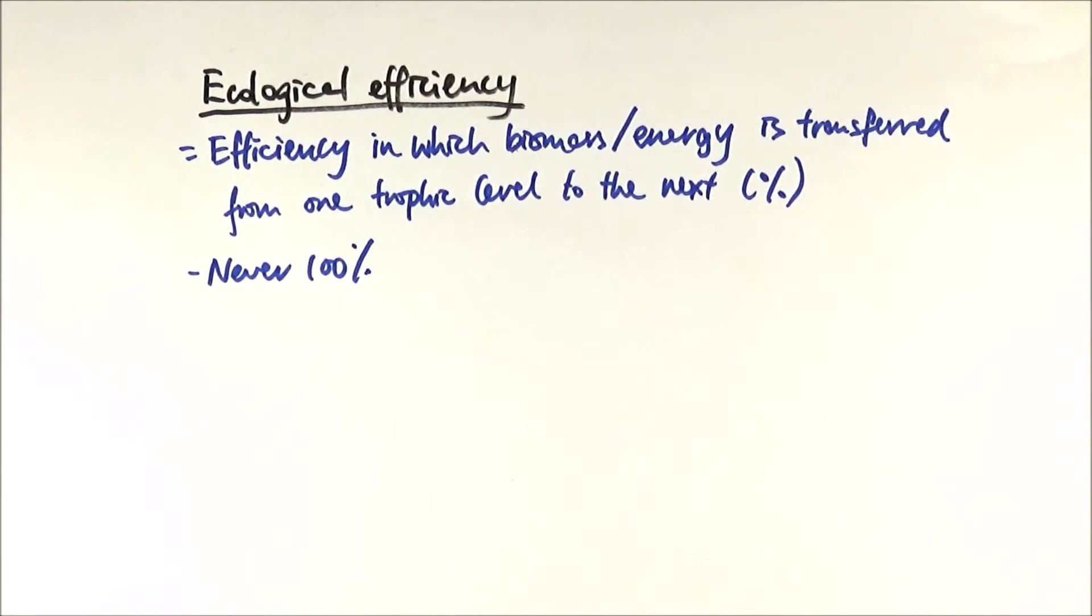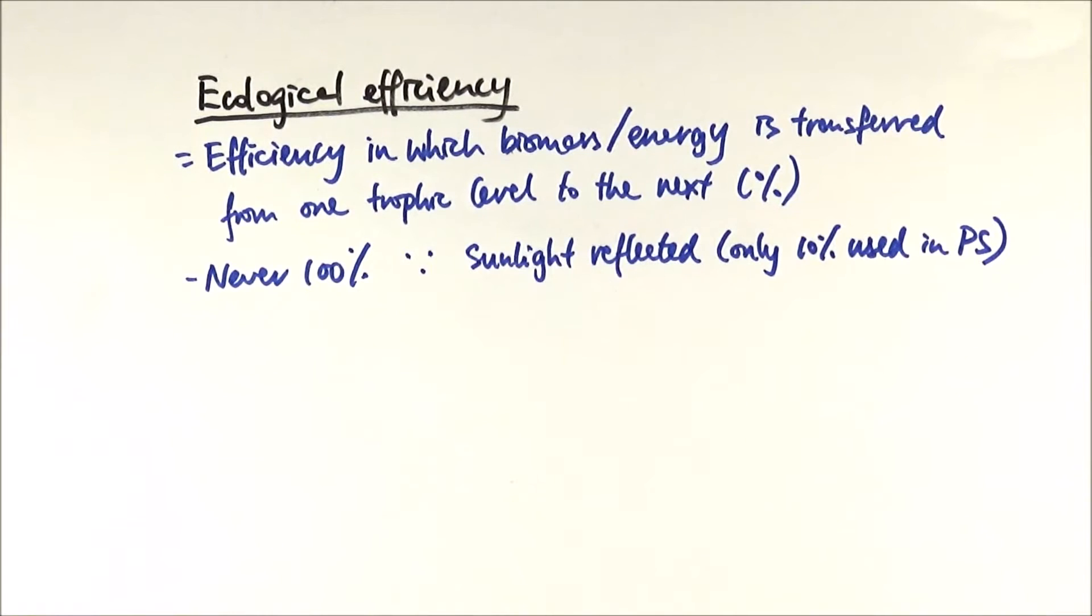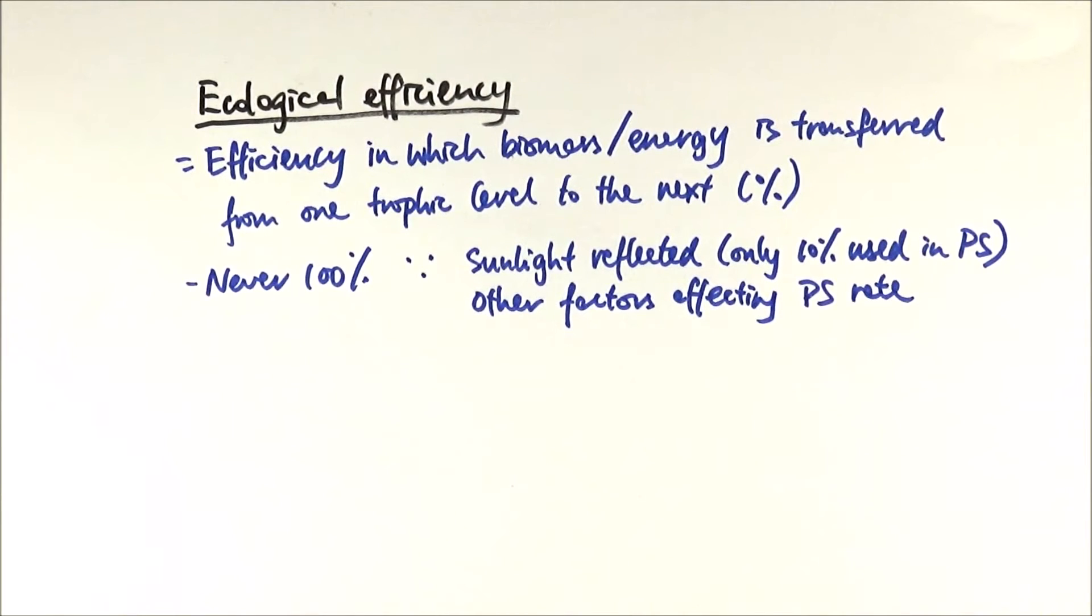When we consider the efficiency, we need to think about why the energy is lost, and they love asking this sort of question in exams as well. In the case of producers to primary consumers, think about the fact that not all of the light is actually used in photosynthesis. Some of it will be reflected, and actually there's only about 10% of the light used in photosynthesis, so there is a massive loss of energy there. There will also be other factors affecting the rate of photosynthesis, for example water availability, or the fact that even some of the energy is being used up within photosynthesis in order for the reaction to occur.